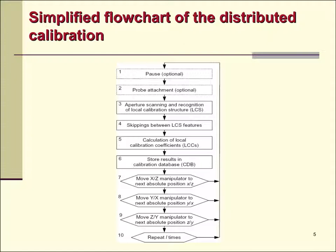Simplified Flow Chart of the Distributed Calibration. The procedure of distributed calibration is a sequence of three basic measurement operations: probe attachment position 2, aperture scanning position 3, and skipping position 4, which are carried out in each net node of the scanner's movement space.